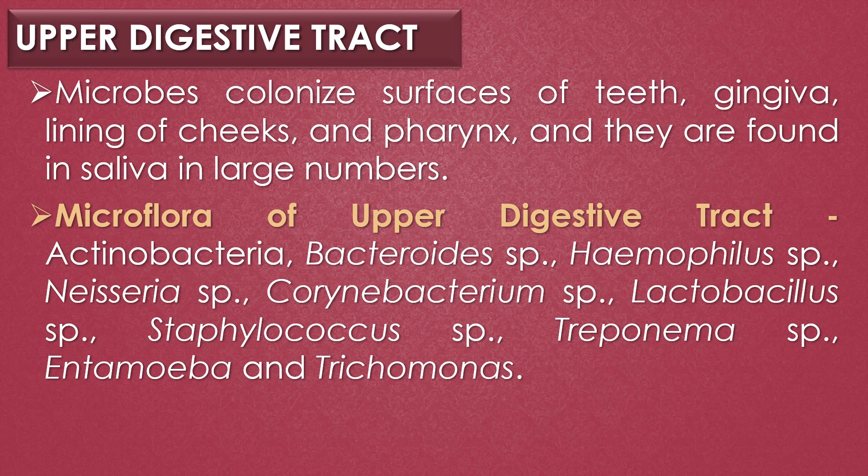Microbes colonize the surfaces of teeth, gingiva, lining of cheeks, and pharynx, and are found in saliva in large numbers. Dozens of species have never been identified. Some identified species of the upper digestive tract include Actinobacteria, Bacteroides species, Corynebacterium species, Haemophilus species, Lactobacillus species, Neisseria species, Staphylococcus species, Treponema species, the protozoan Entamoeba species, and Trichomonas species.